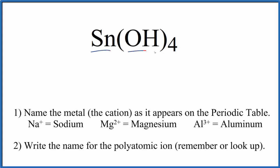To write the name for Sn(OH)4, let's first write the name of the metal as it appears on the periodic table. Sn, that's just tin.